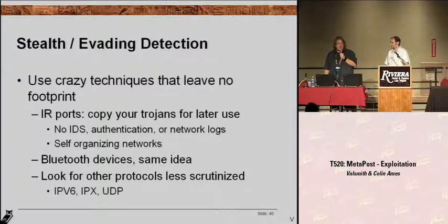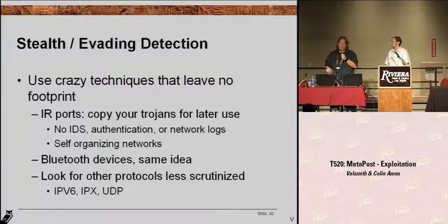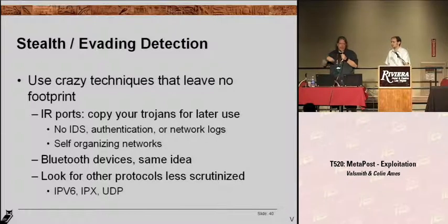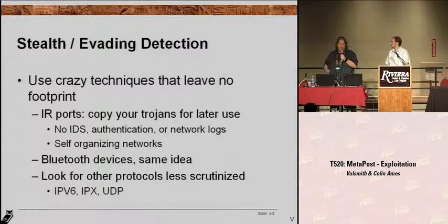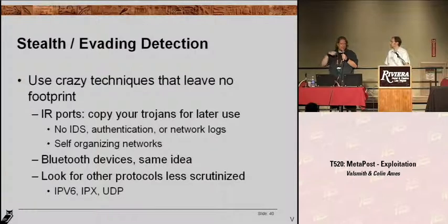Focus on crazy techniques that don't leave any footprint on the network. Lots of big organizations are moving towards full packet capture and network logging and IDSs that store what's been happening forever. So use things that aren't ever seen by these systems at all, like IR ports. You walk into a room like this full of laptops — a lot of these laptops have IR ports. They'll automatically connect to each other, set up a network, and share folders. You can just start throwing your Trojans on everybody's machine over IR, and then later when you hack them, your code is already there. A forensics analysis is never going to see anything going across the network because it never went on a network — it went over IR, Bluetooth, or any of these other strange protocols.